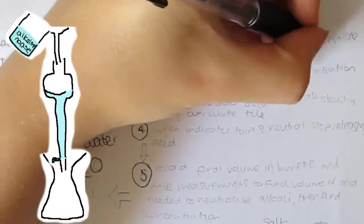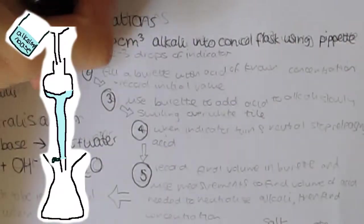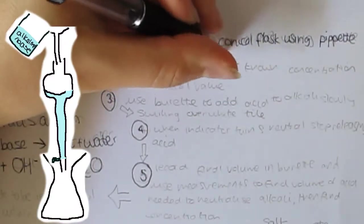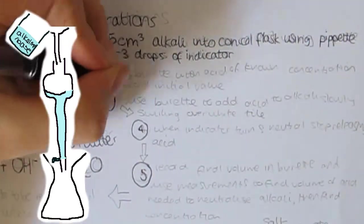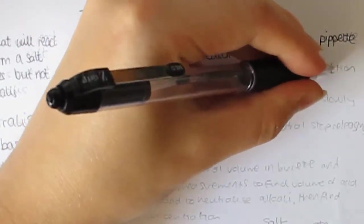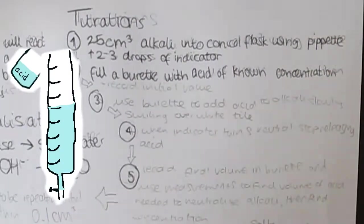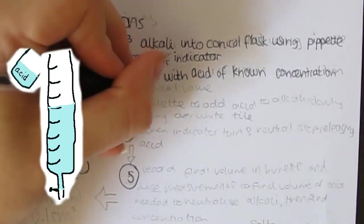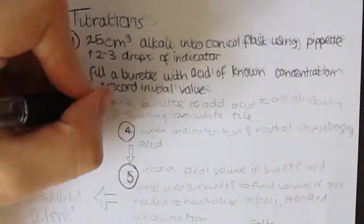Step 1 is to put 25cm³ of alkali into a conical flask using a pipette for exact measurement, and 2-3 drops of indicator as well. Step 2, fill a burette with acid of a known concentration whilst wearing safety goggles and record the initial value.